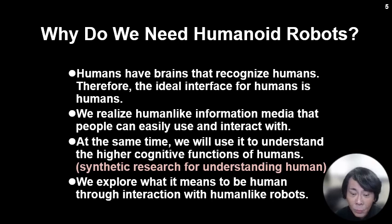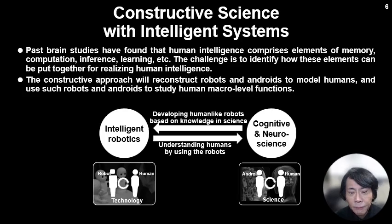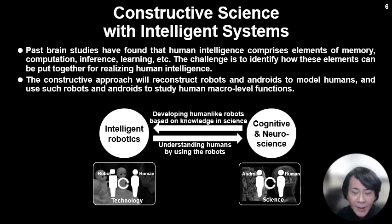At the same time, we will use it to understand higher cognitive functions of humans. So we explore what it means to be human through interaction with human-like robots. This approach is called constructive science with intelligent systems. We are developing robots for our future and for understanding human cognitive functions.